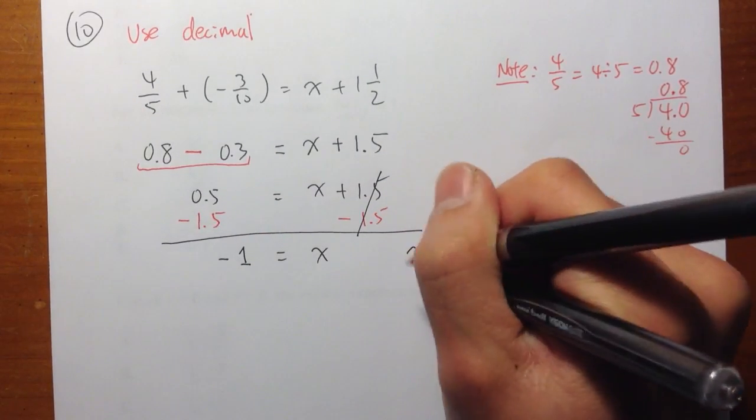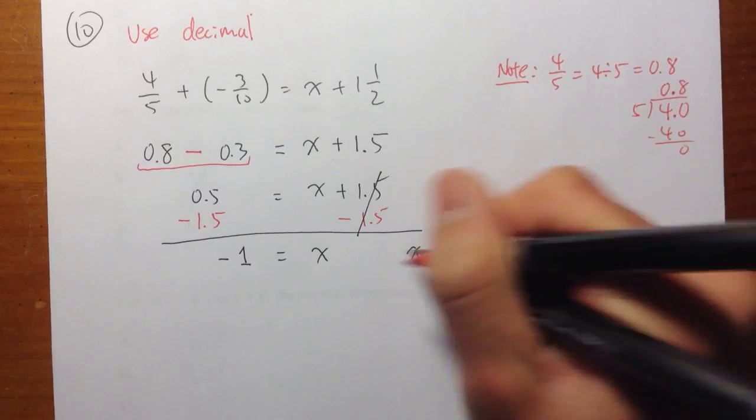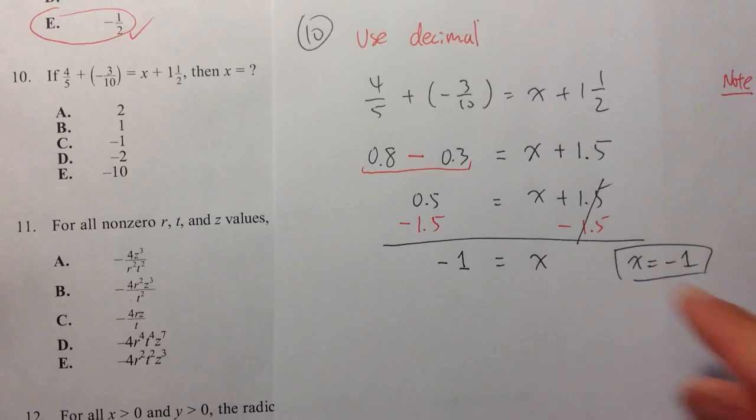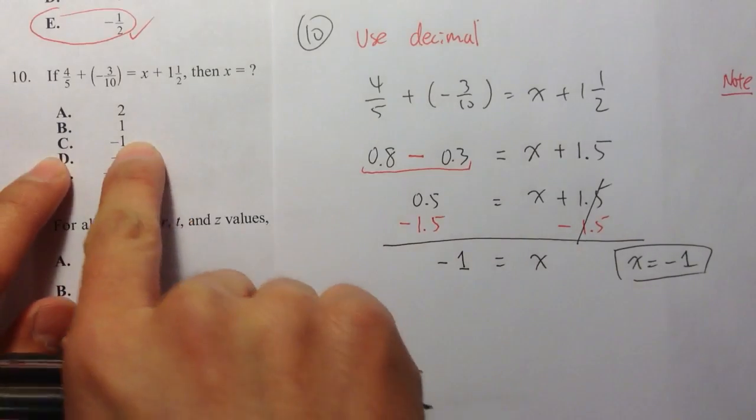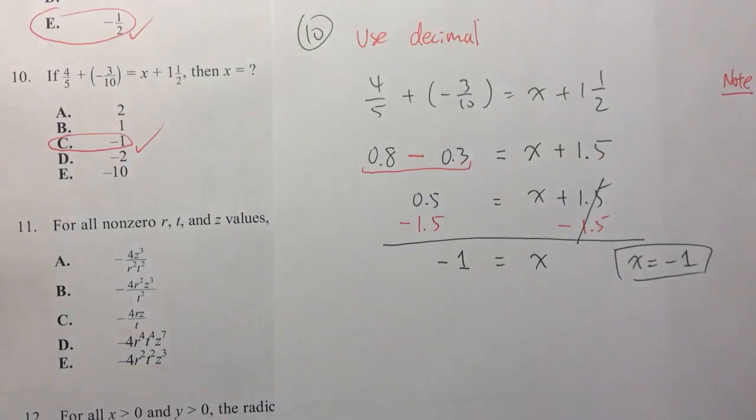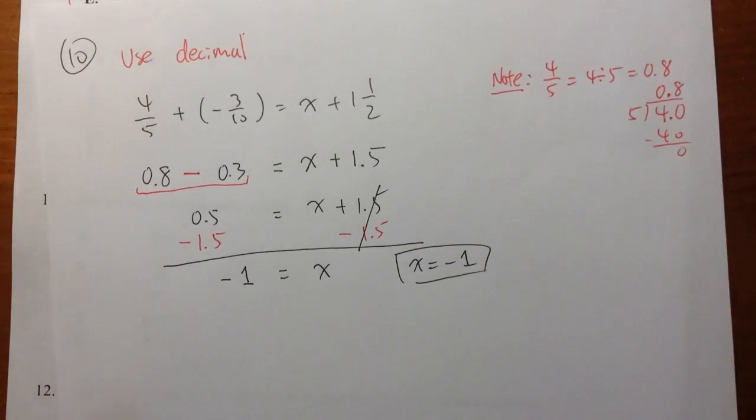So I can also say this is x equals negative 1. And as we can see I got my answer, negative 1, which is choice C. And I'm going to show you two different ways in the next video.